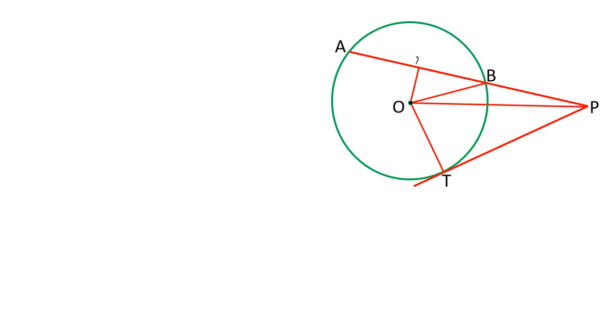Draw OM perpendicular to AB. So OM is perpendicular. Join OT. OT is also perpendicular because tangent and radius are perpendicular to each other.